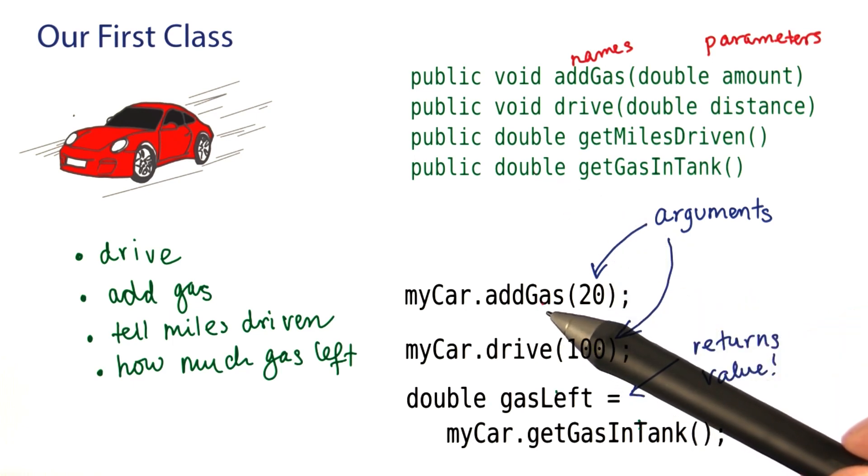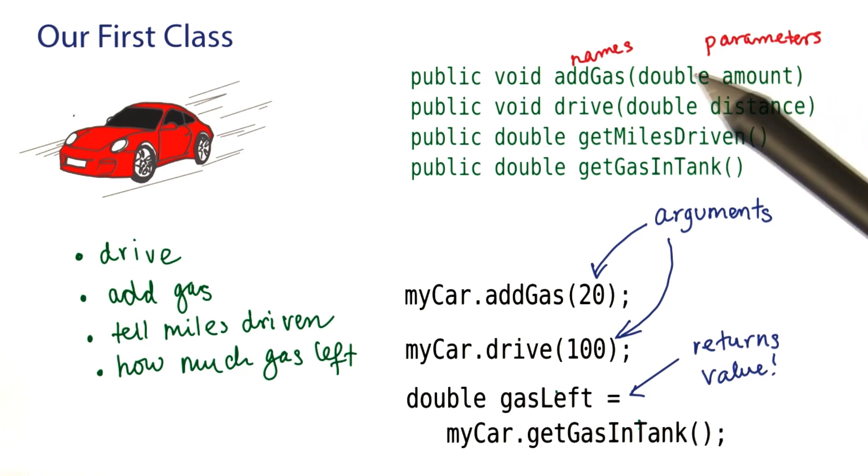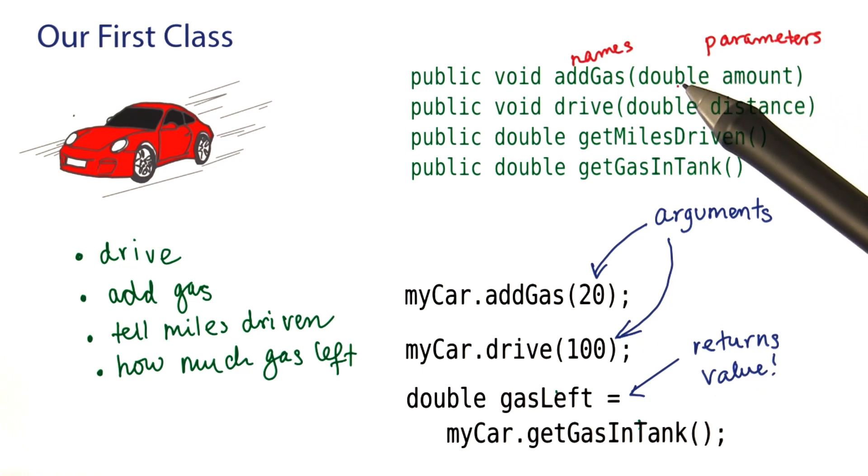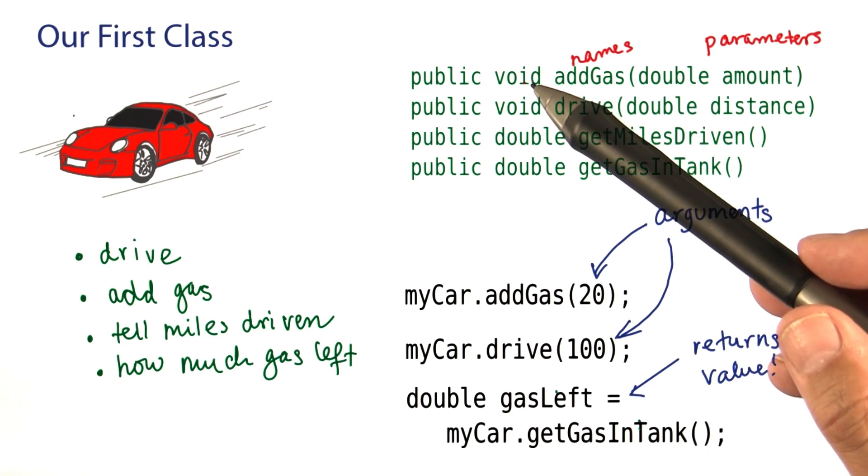Look at the add gas method here. Here we see it takes an argument, the number of gallons added. I've called that here the amount, and it's of type double. This method doesn't return any value, so it's declared as void.